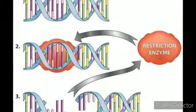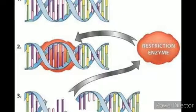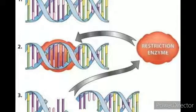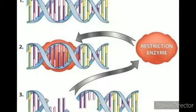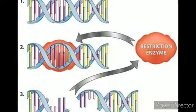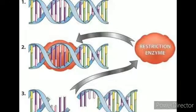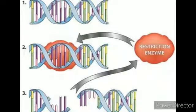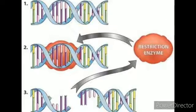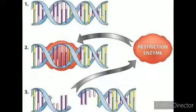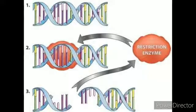In the same way, EcoRI recognizes the palindromic sequence 5 prime G-A-A-T-T-C 3 prime on one strand, and 3 prime C-T-T-A-A-G 5 prime on the other. It cuts the DNA between G and A on both strands. This leads to the formation of sticky single-stranded portions at the ends, and this type of cut is called a staggered cut.